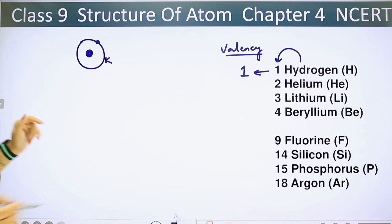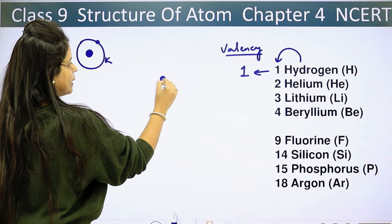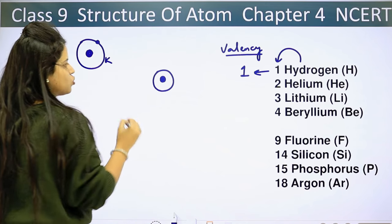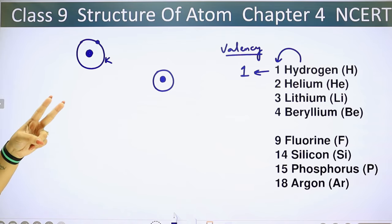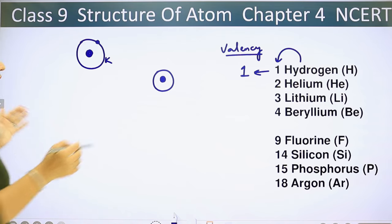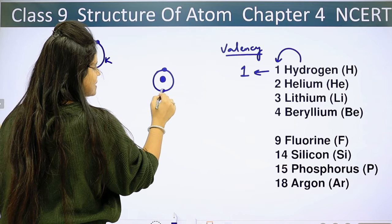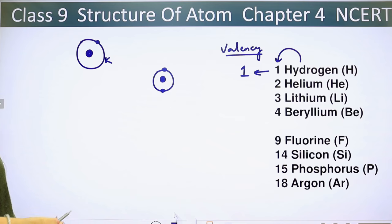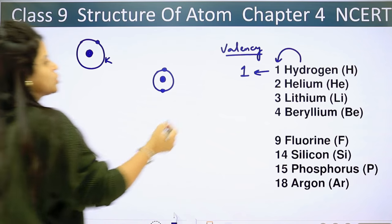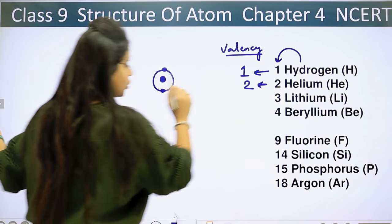Next, let's talk about helium. This is our nucleus with the K-shell. Helium has atomic number 2, meaning it has 2 electrons. Both electrons go into the K-shell. In the outermost shell, it has 2 electrons, so the valence of helium is 2.